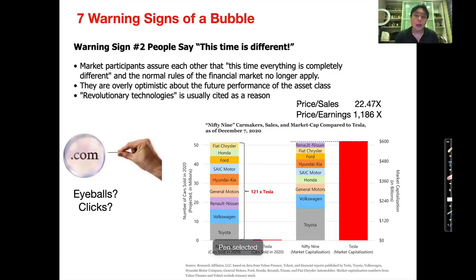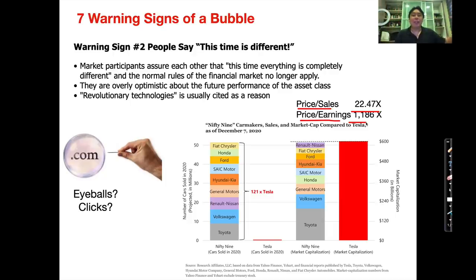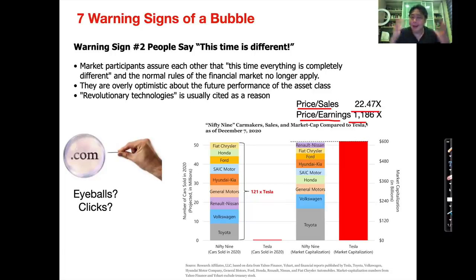If you look at other metrics, Tesla's price-to-sales ratio is 22 times. That's crazy. Google's price-to-sales ratio is about 8; Amazon's is like 4. Tesla's price-to-earnings is like 1,000. This reminds me of Yahoo. In the old days people said Yahoo would change the world, it was the world's biggest search engine, it was revolutionary. Sure enough, the bubble burst and Yahoo dropped from $200 to five bucks. People said, why didn't I see that coming?